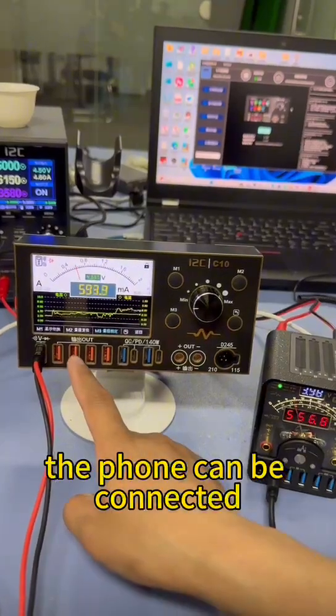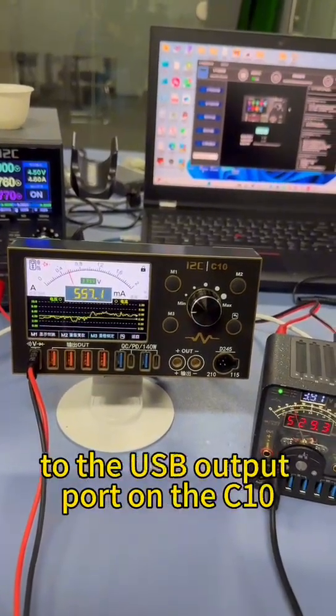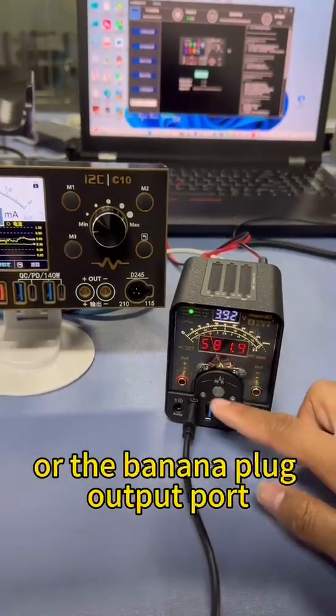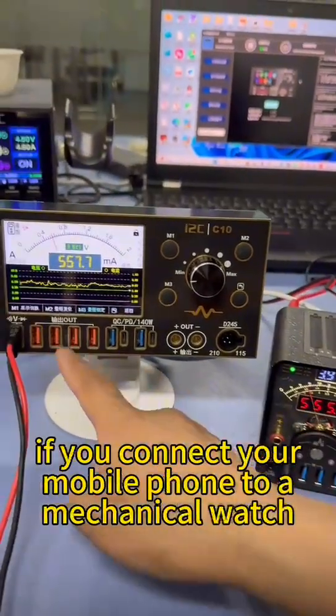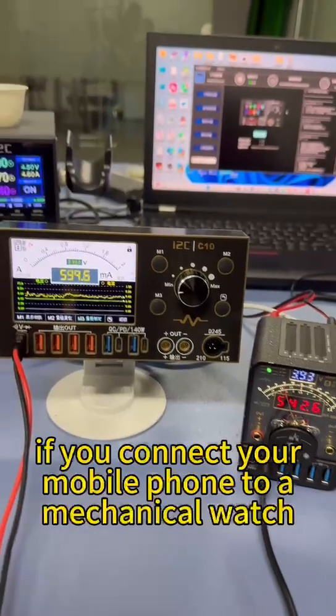The phone can be connected to the USB output port on the C10 or the banana plug output port. If you connect your mobile phone to a mechanical watch, you must connect it to the output interface on the front.